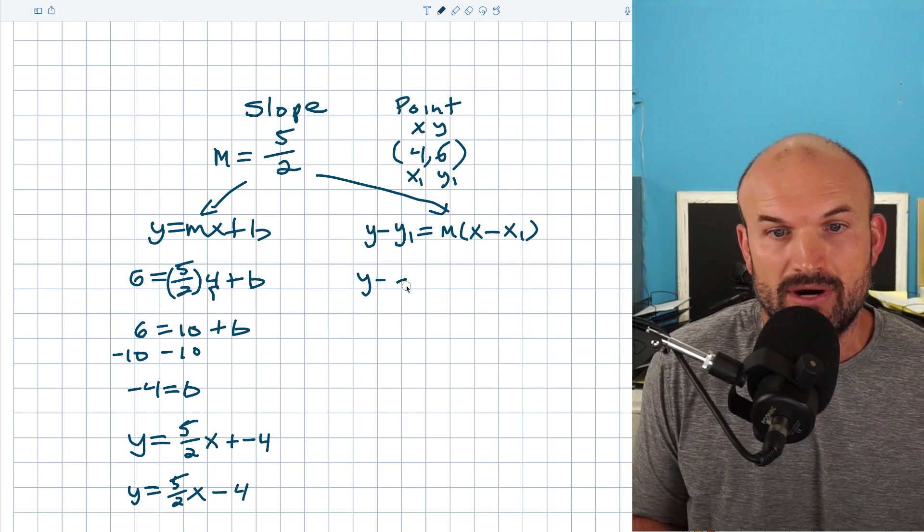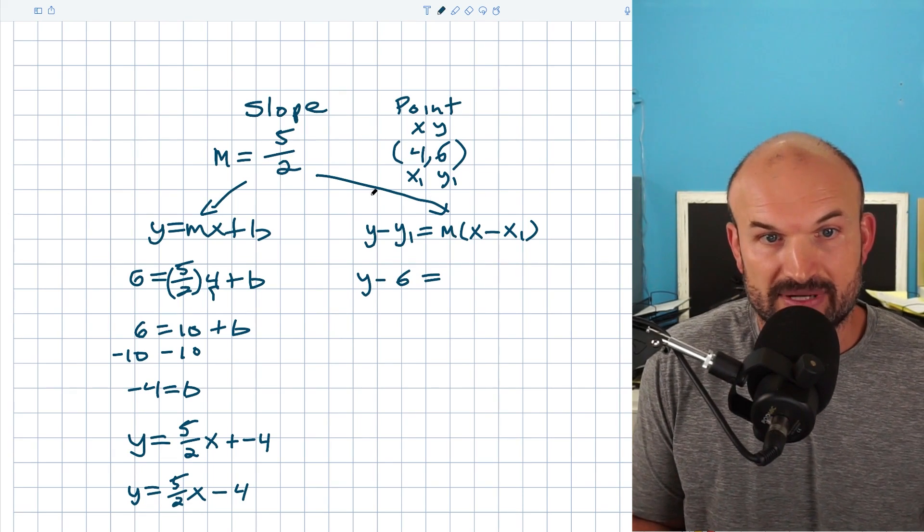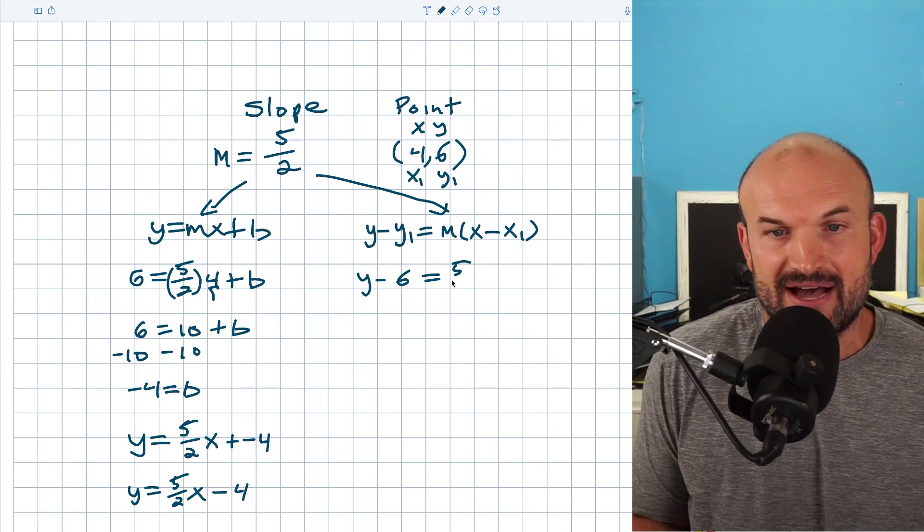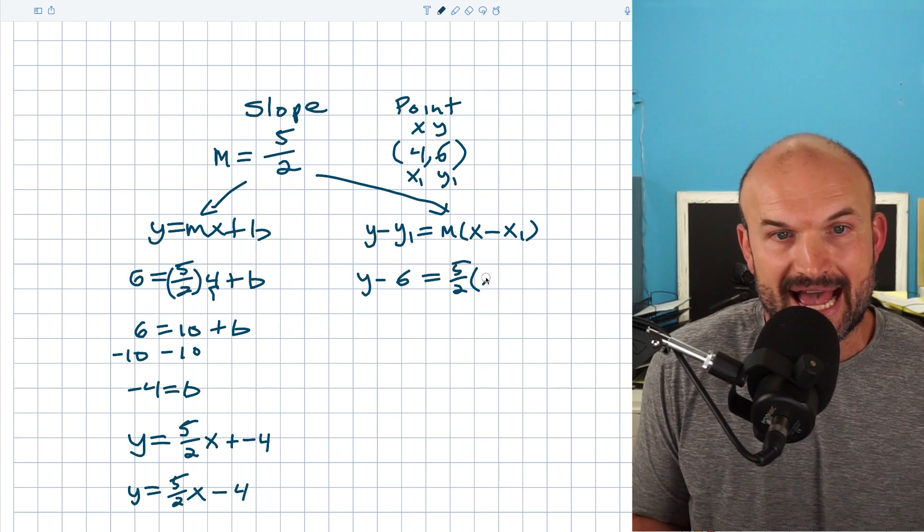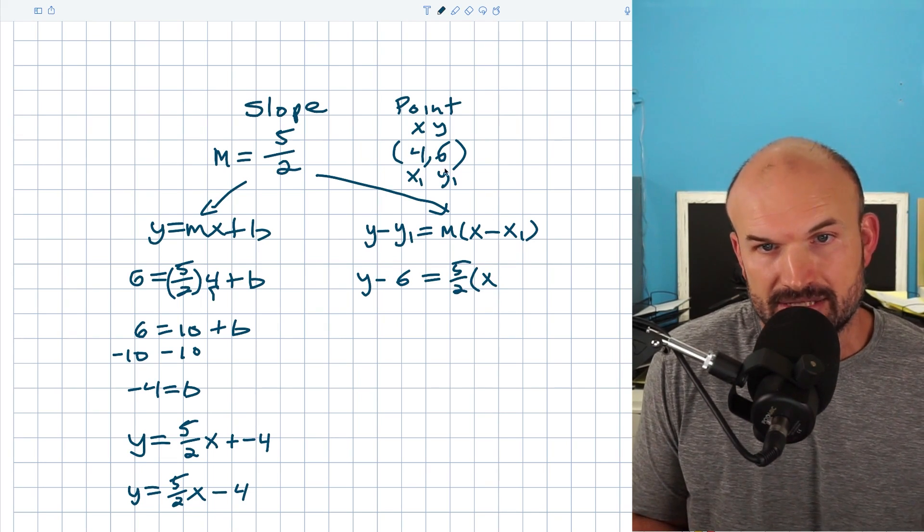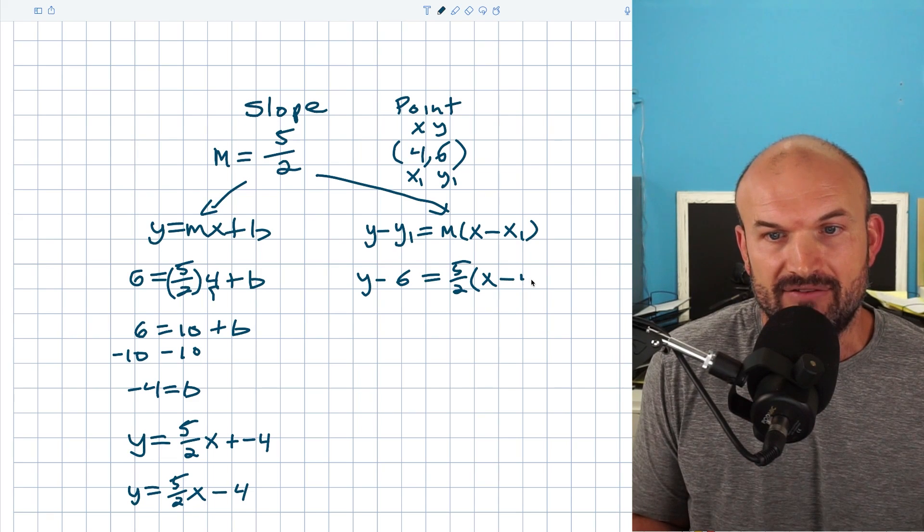Therefore I get y minus y1, which is six, equals m, which represents my slope. So that's going to be five halves. And that's going to be times x minus x1. So x1 is going to equal four.